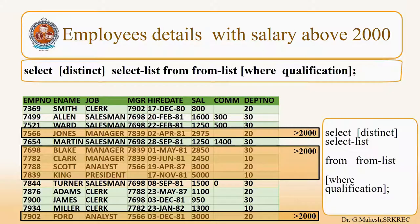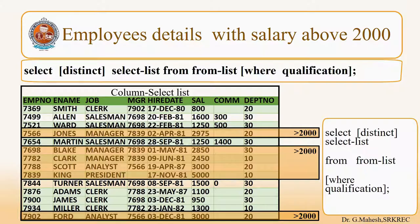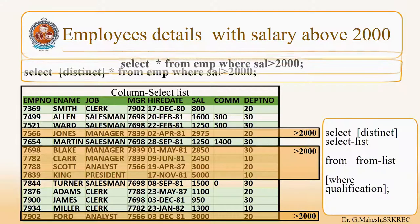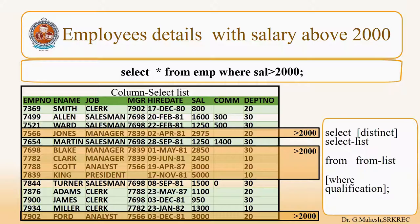The next query is employee details with salary above 2000. That means we have to filter the rows — you don't want all the rows. Therefore we have to use the WHERE clause and the condition is SAL > 2000. The selection list will be all the columns, that is STAR (*). Therefore the final command will be SELECT * FROM EMP WHERE SAL > 2000, and the result is highlighted.